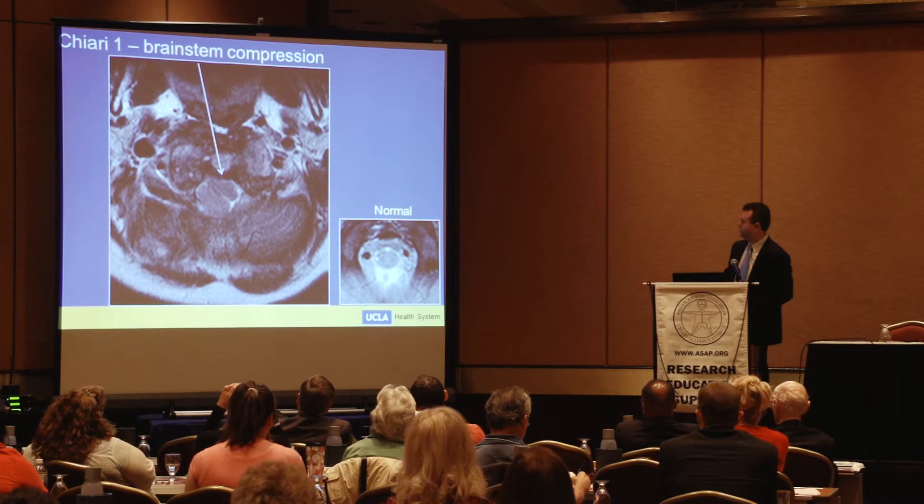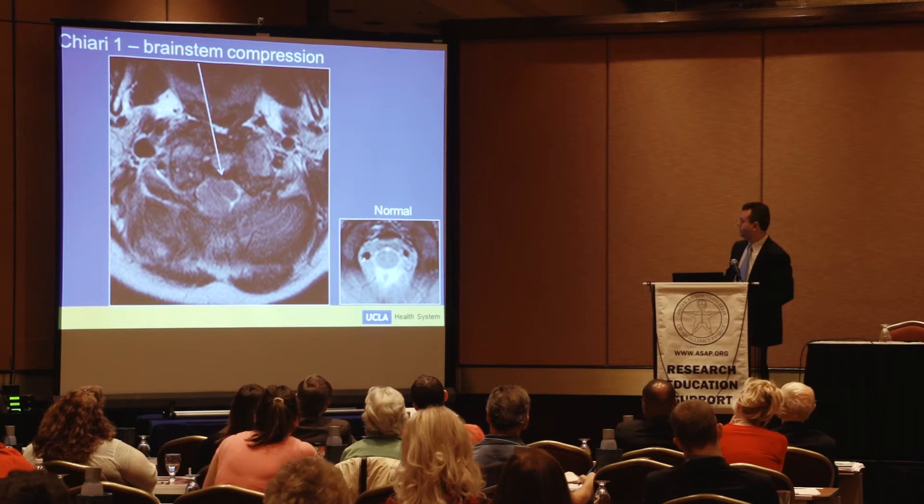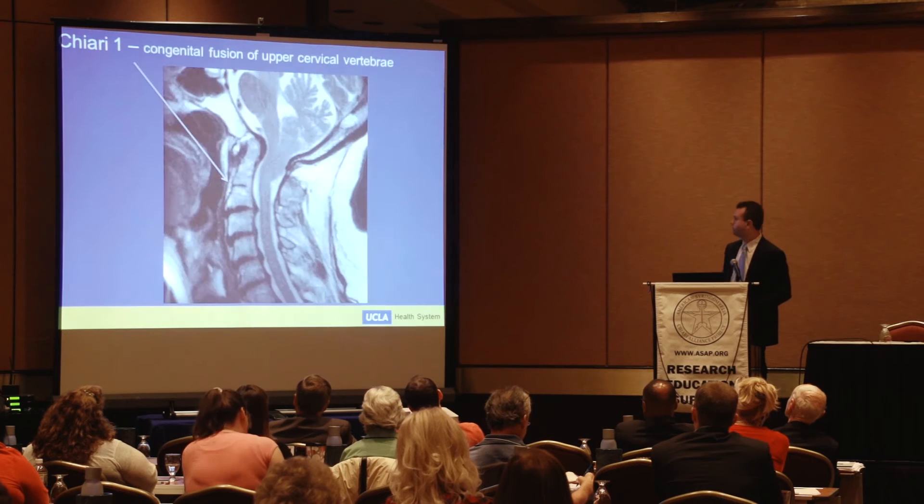Remember how the brainstem should look with CSF all around it — a nice oval or circle. Here we see it being compressed by a tonsil extruding down. The CSF is almost gone, and we don't see the vertebral arteries very well. We can see vertebral artery compression in certain patients, and we'll see some of the consequences of this later.